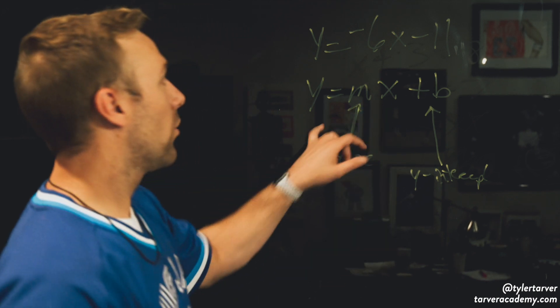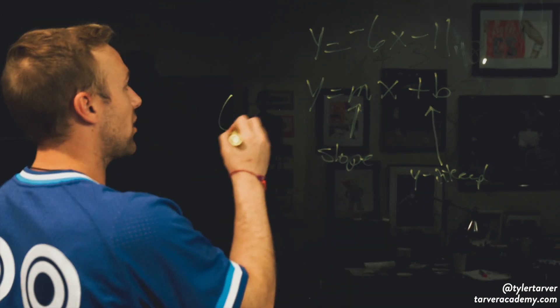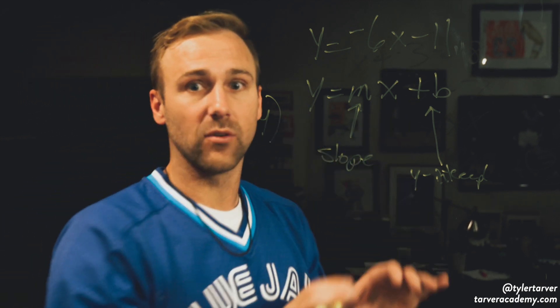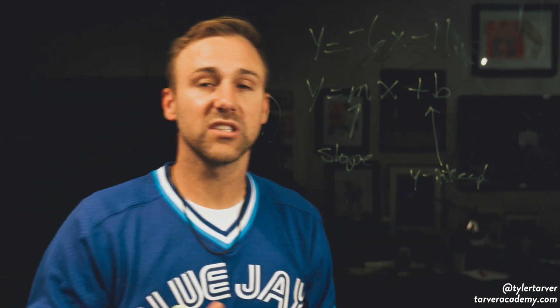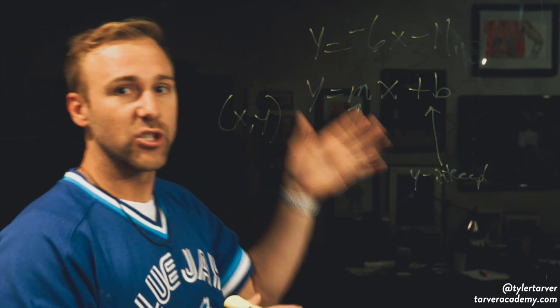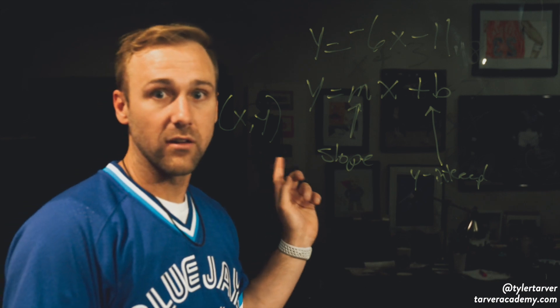And then the x and the y, those are going to be a coordinate, any coordinate that is on that line. So usually, we don't keep x and y, like those aren't going to be numbers. When we're saying, put this in slope-intercept form, you're not going to want anything for x and y.